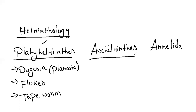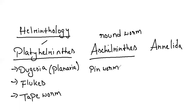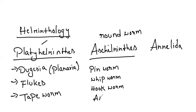Aschelminthes, we otherwise call roundworms. It is cylindrical in structure, but on cross-section it looks round — that's why we call it roundworm. We have many different roundworms. For example, pinworm, mostly parasites for vertebrates — which is Enterobius vermicularis. And whipworm, hookworm, and Ancylostoma. Roundworm which is Ascaris. Filarial worm — Wuchereria bancrofti, which causes elephantiasis.